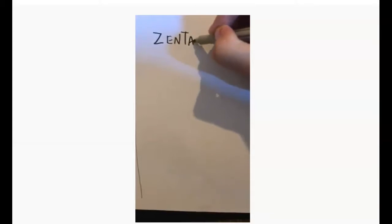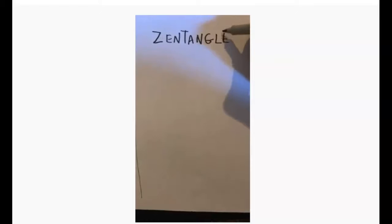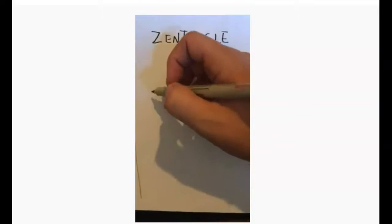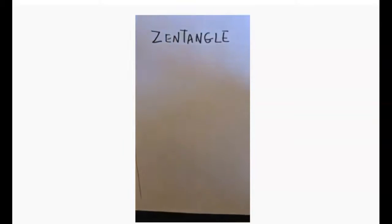So a zentangle is basically a new word for something that's been around for a long time. It means to create repetitive patterns using lines and shapes, and there's two different ways that people do it.